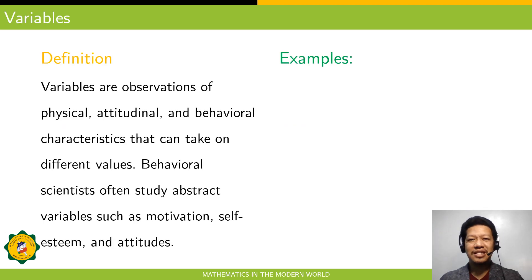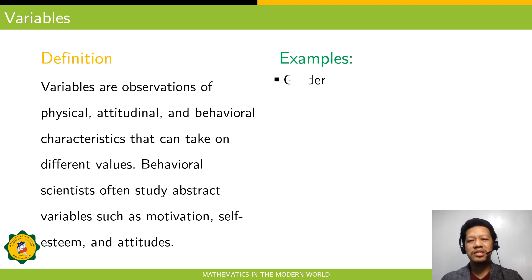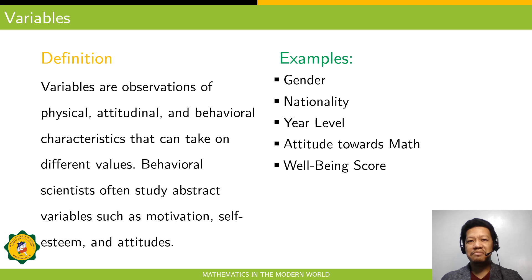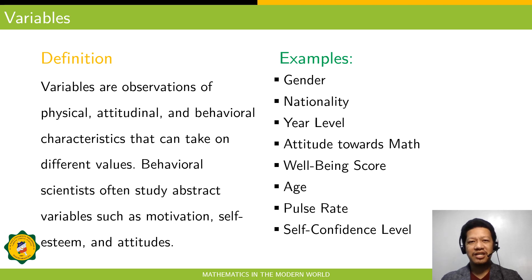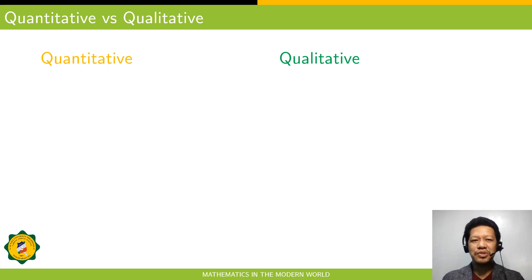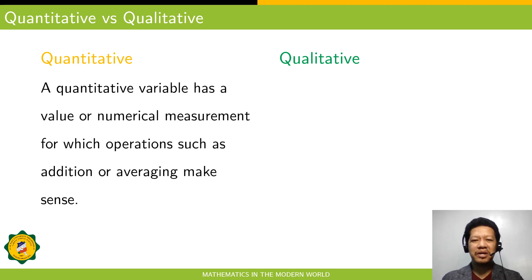Another basic term in statistics is variable. Variables are observations of physical, attitudinal, and behavioral characteristics that can take on different values. Behavioral scientists often study abstract variables such as motivation, self-esteem, and attitudes. Examples of variables include gender, nationality, year level, attitude towards math, well-being score, age, pulse rate, and self-confidence level. Variables are categorized into two types: quantitative and qualitative. A quantitative variable has a numerical measurement for which operations such as addition or averaging make sense.